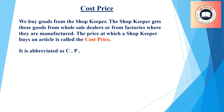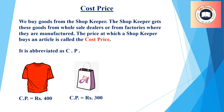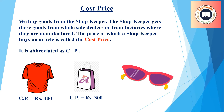Here the shopkeeper buys the red t-shirt for Rs. 400, so the cost price of the red t-shirt is Rs. 400. The shopkeeper buys the bag for Rs. 300, so the cost price of the bag is Rs. 300. The goggles are bought by the shopkeeper for Rs. 600, and the cost price of it is Rs. 600.